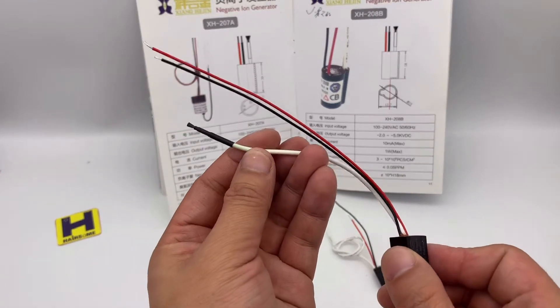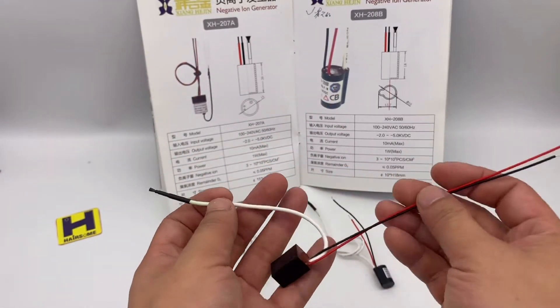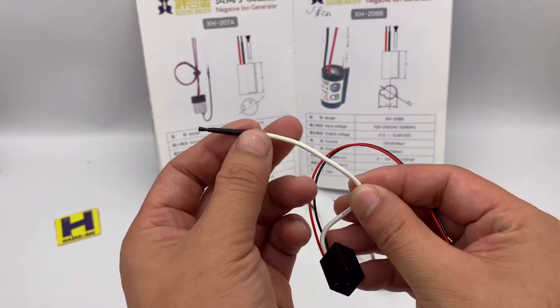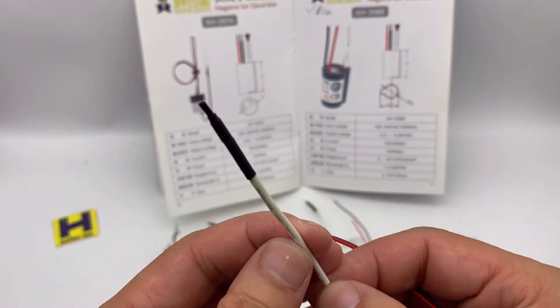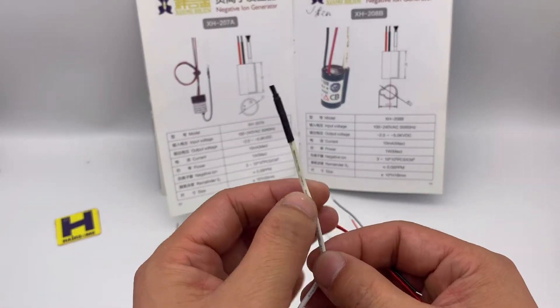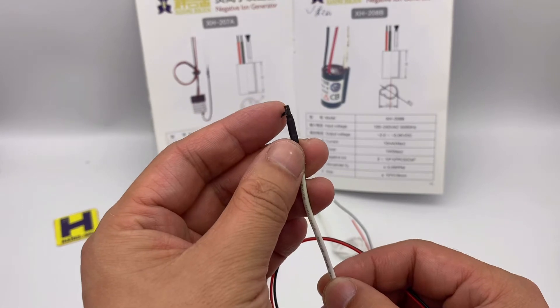This also, this is a brush. So using this can output the ionic function. This is a carbon brush, this is a brush.